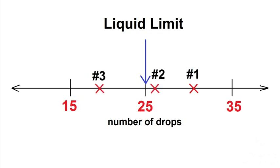You will want the number of drops from at least one of your tests to be less than 25. This is because the liquid limit corresponds to 25 drops. In order to accurately determine the liquid limit, we need at least one data point less than and one data point greater than 25 drops.